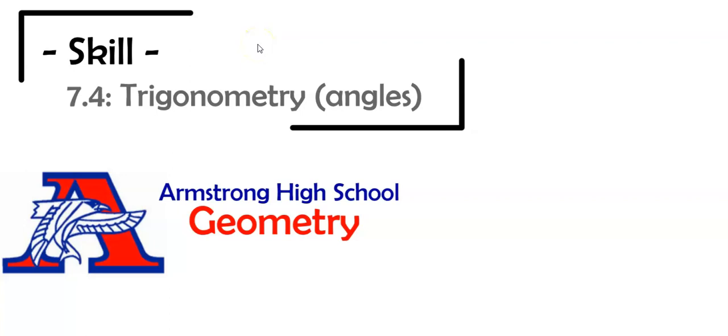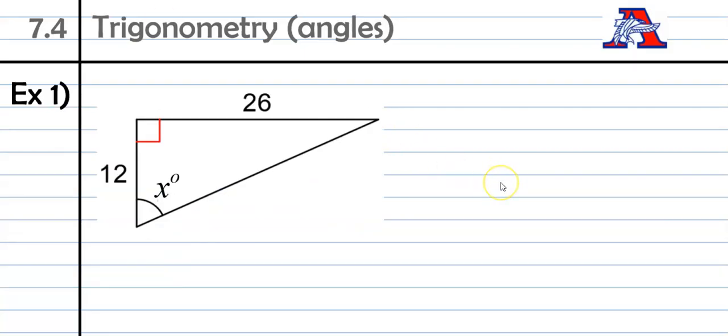Hey guys, this is 7.4 and in this lesson we're going to use trigonometry to find angles. Once again, we're going to start with an example and then peel it back from there. But finding angles is actually, in my opinion, easier than finding sides. The other nice thing is the steps are pretty similar to what they were with sides, so it won't be brand new at this point.